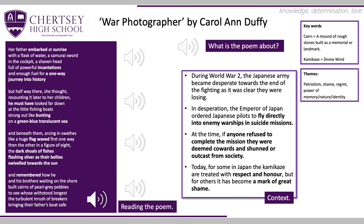Notice the enjambment taking us from stanza one to stanza two: 'Enough fuel for a one-way journey into history. But halfway there, she thought, recounting it later to her children, he must have looked far down at the little fishing boats strung out like bunting on the green-blue translucent sea.' That enjambment takes us into the second stanza, and notice the poem changes direction — just as the kamikaze pilot's plane changed direction.